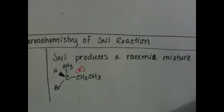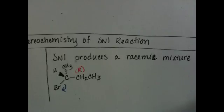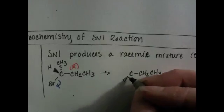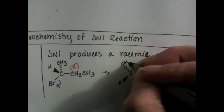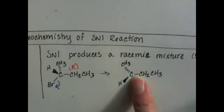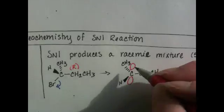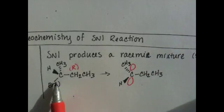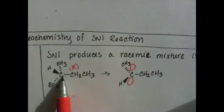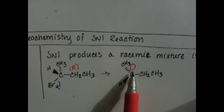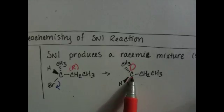In the SN1 mechanism, the initial step is loss of the leaving group to form a carbocation. When the carbon-bromine bond breaks, this carbon that was sp3 hybridized becomes sp2 with three areas of electron density and one empty unhybridized P orbital with a lobe up above the plane of the molecule and a lobe down below.